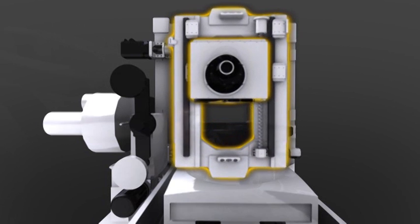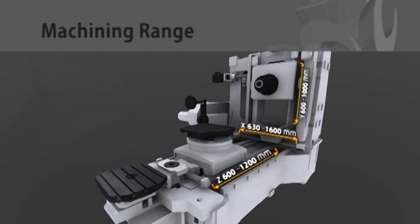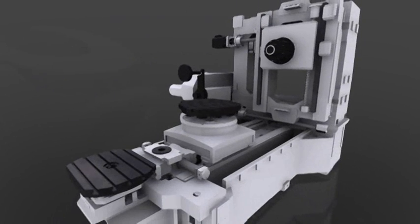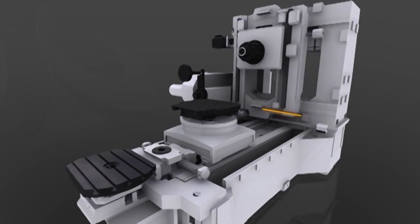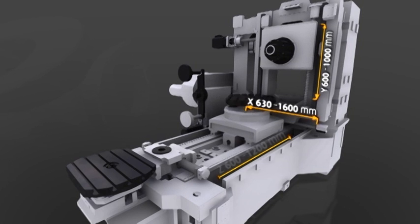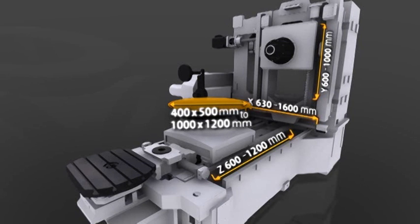Machining range: The entire HMC series machining range varies in axis stroke of X axis from 630 to 1600 mm, Y axis from 600 to 1000 mm, and Z axis from 600 to 1200 mm, with the table size ranging from 400 by 500 mm to 1000 by 1200 mm per pallet, having weight carrying capacity range from 400 kg to 2500 kg.